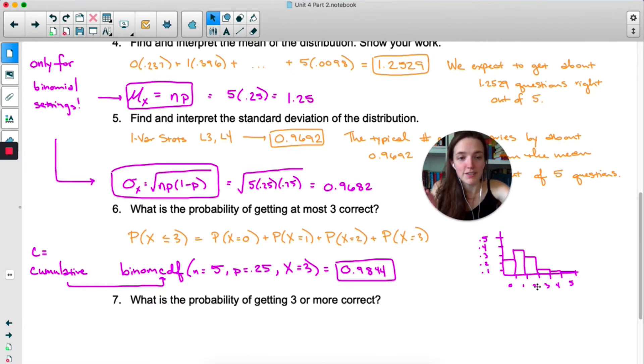pdf, if you put in 2 for x, you're only going to get the probability that x equals 2.